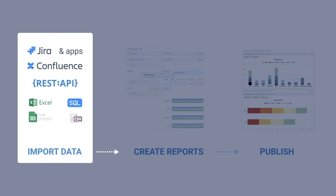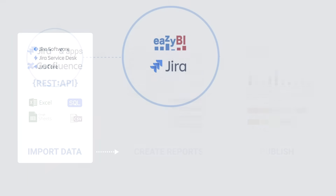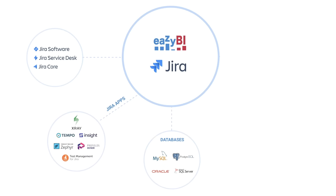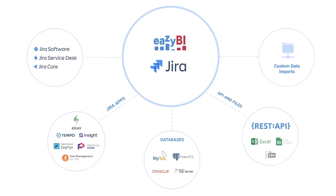EZBI is a non-real-time analysis tool, which means the data you want to analyze must first be imported from a source system like Jira. In addition, EZBI can accept data from Jira apps, SQL databases, REST API and other data sources — use them separately or combine them with the Jira issue information.